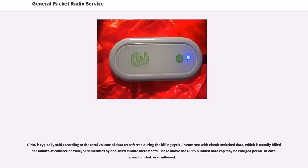GPRS is typically sold according to the total volume of data transferred during the billing cycle, in contrast with circuit-switched data, which is usually billed per minute of connection time, or sometimes by one-third minute increments. Usage above the GPRS bundled data cap may be charged per megabyte of data, speed-limited, or disallowed.